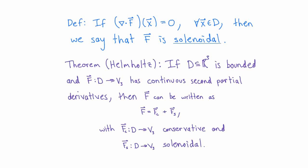If the divergence of a vector field is identically zero, we say the vector field is solenoidal. Physically, in an infinitesimal region around any point, the vectors are just circulating without any net input or output. There's a theorem called the Helmholtz decomposition theorem, or the fundamental theorem of vector calculus: any vector field on a bounded subset of R3 with continuous second partial derivatives can always be written as a sum of a conservative and a solenoidal vector field.